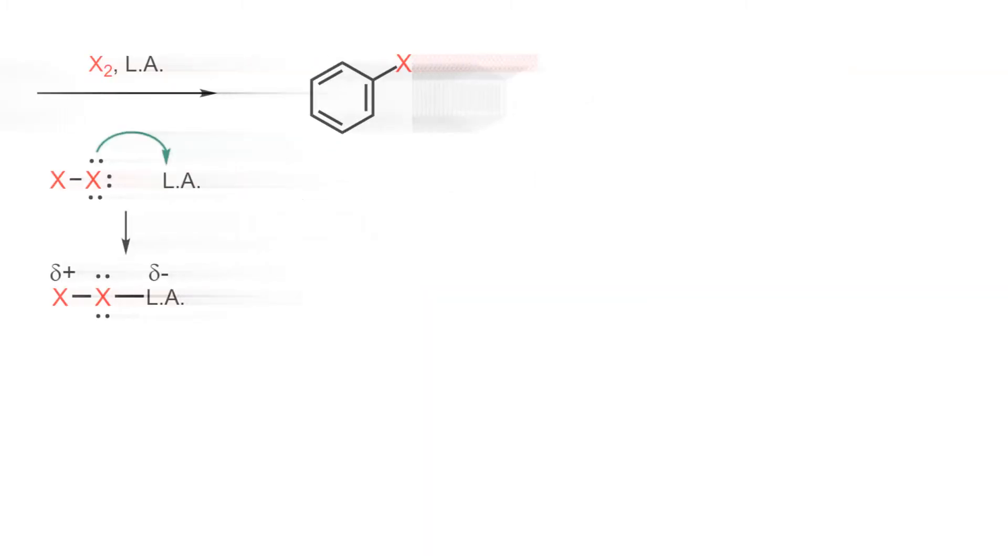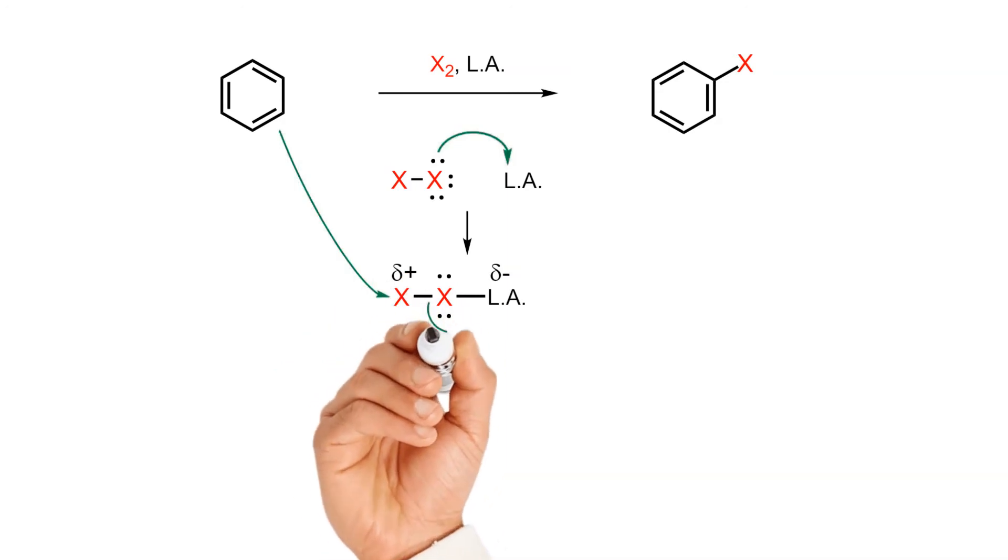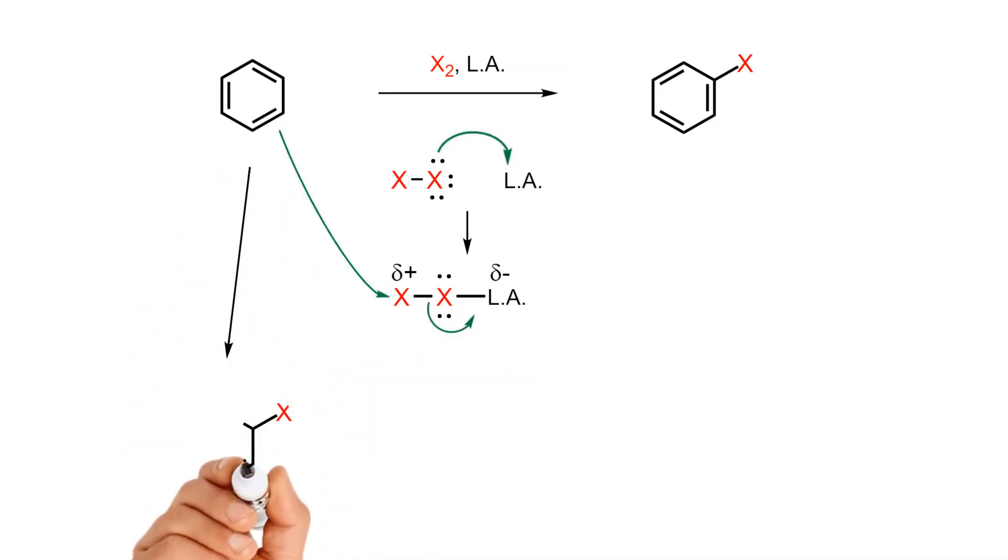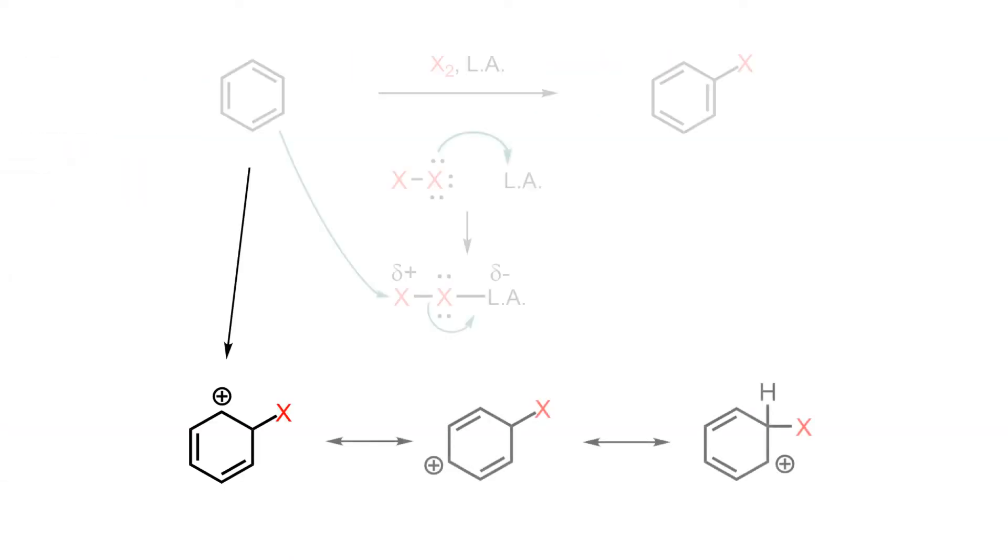The enhanced electrophilicity of the halogen forces the benzene to attack as a nucleophile in the rate-determining step, breaking the weak halogen-halogen bond and affording a resonance-stabilized carbocation. Even though the intermediate carbocation is not aromatic, it is stabilized by significant delocalization across most of the cyclic system.